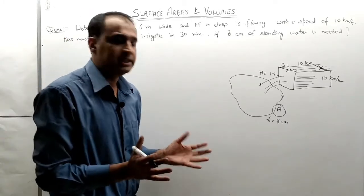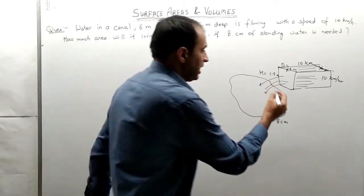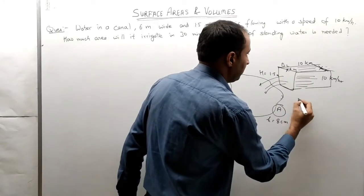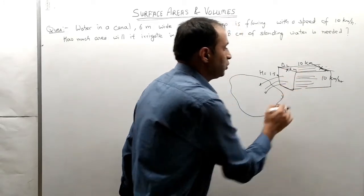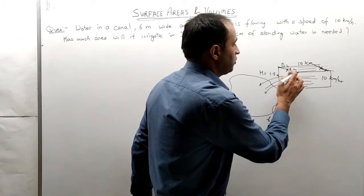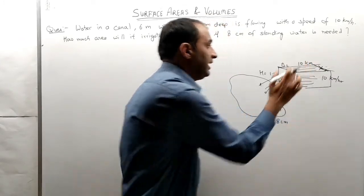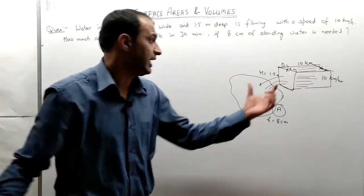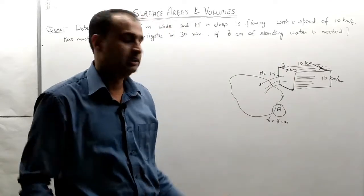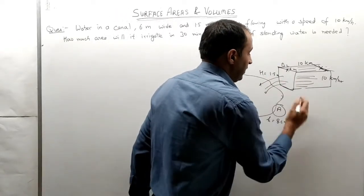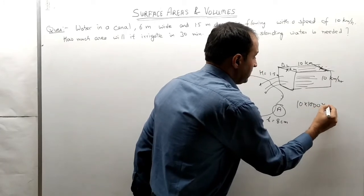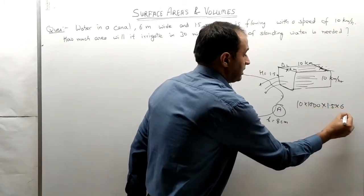How much volume of water flows? The water dimensions are: h equal to 1.5, b equal to 6, and the length traveled is 10 km. So the volume of water flowing in one hour is 10 km into 1.5 into 6.